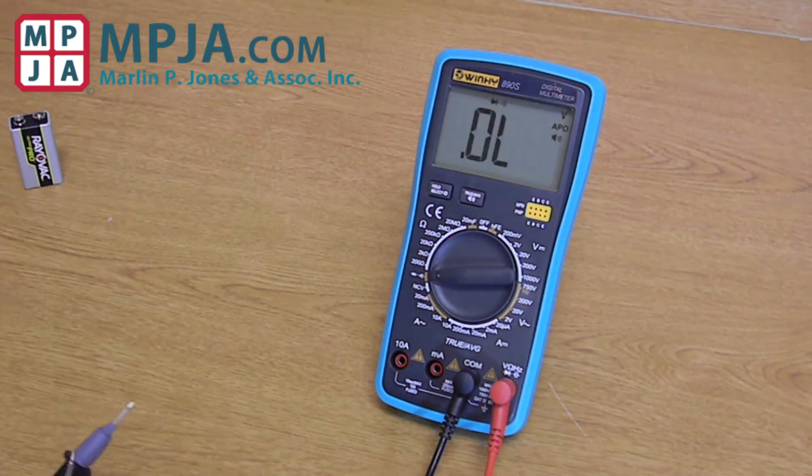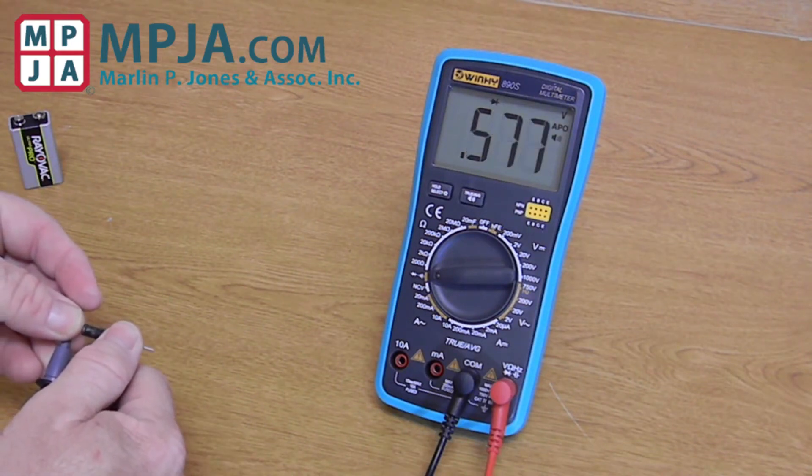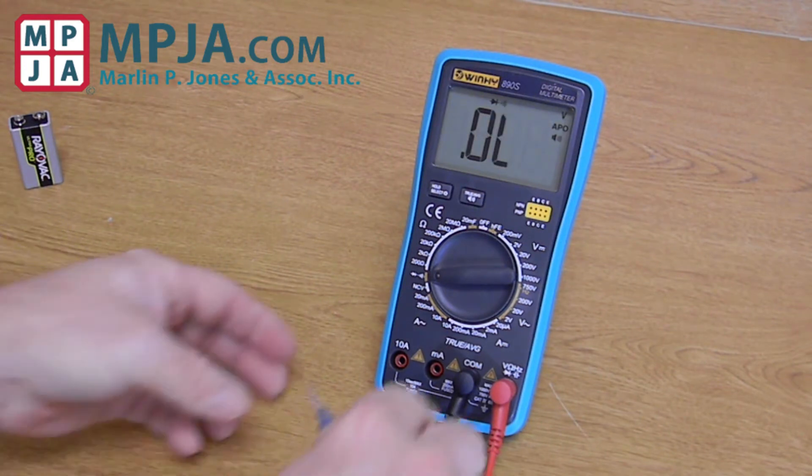It also has a built-in diode tester. 0.577 volt. Super range.